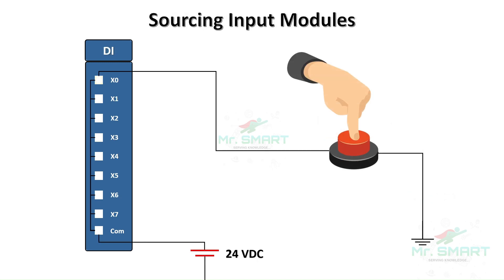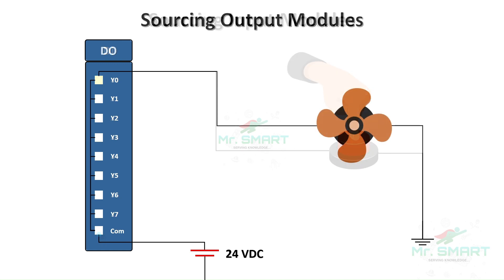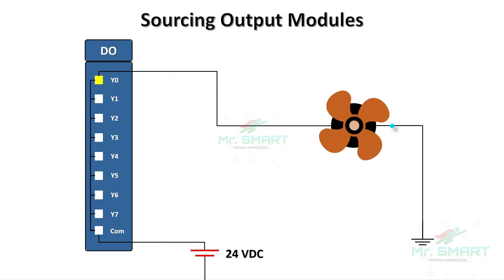On the other hand, a sourcing input module supplies the current to the input device. In this configuration, the input module is the source, and the device, such as a sensor, acts as the sink by connecting to ground. So the input module is providing the voltage to the field device. Similarly, a sourcing output module provides current to the connected load, such as a motor or lamp. It sources the voltage, while the output device sinks the current by connecting to ground.